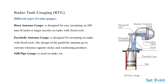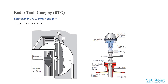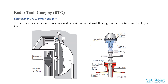The still pipe gauge is used on tanks with still pipes and with all compatible products such as crude oil and gasoline. It transmits radar waves from a cone-shaped antenna towards the liquid surface inside the pipe. The still pipe can be mounted in a tank with an external or internal floating roof, or on a fixed roof tank for level measurement of liquefied gas in LPG or LNG tanks.